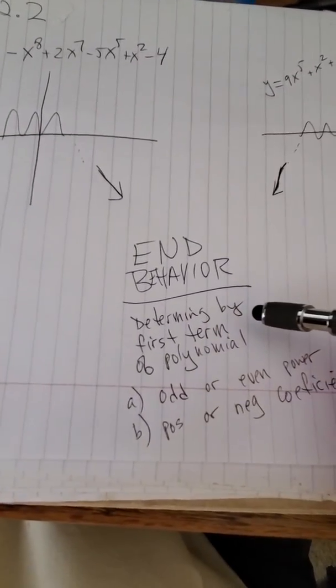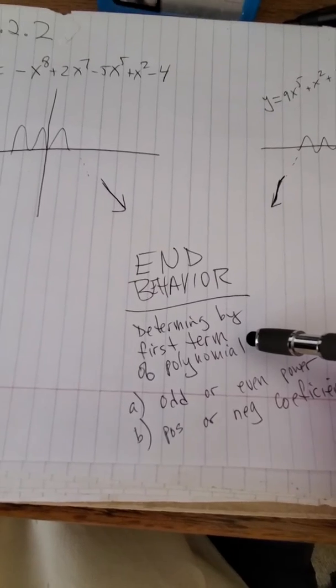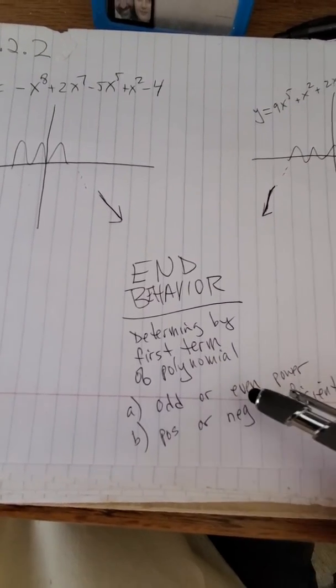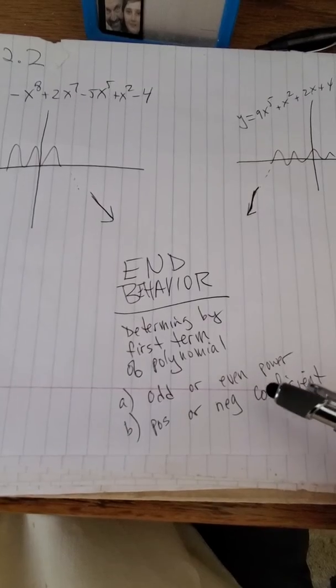And that's determined by the first term of the polynomial, whether it's an odd or an even power, and whether it's a positive or negative coefficient.